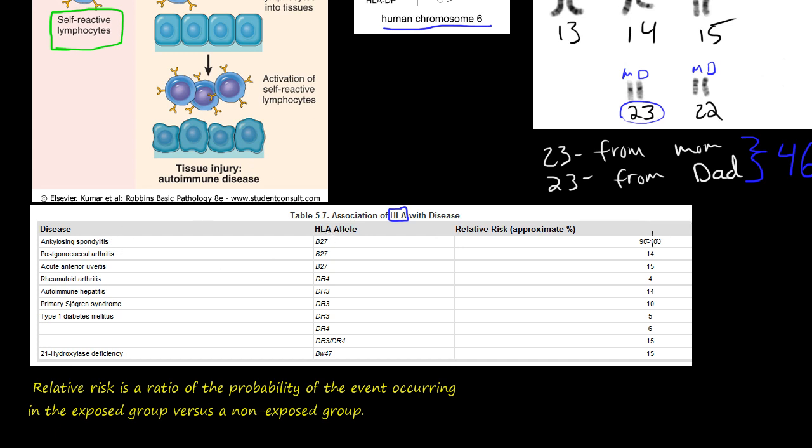And this is relative risk. If you don't understand what relative risk is or odds ratio, relative risk is a ratio of the probability of the event occurring in the exposed group versus a non-exposed group. It's pretty much just say, what are your chances? So you can think of it like that. If you have an HLA B27, you're 90 to 100% more likely to develop ankylosing spondylitis than someone who doesn't have this allele.